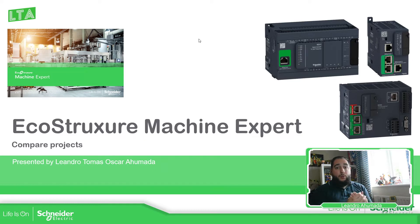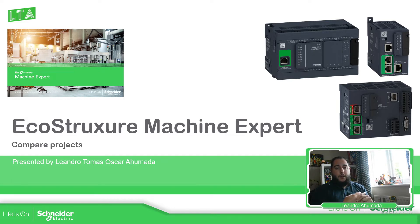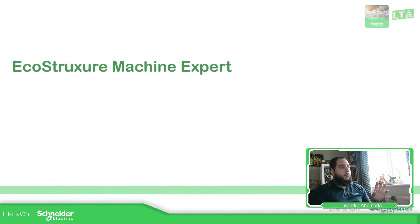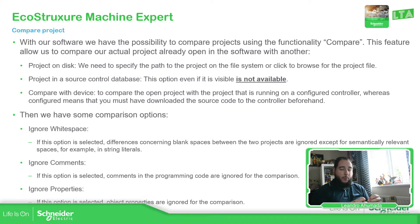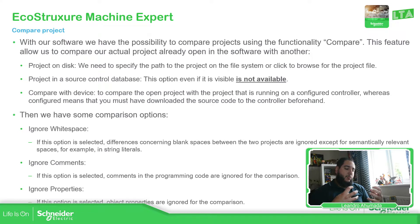In the past, when we used SoMachine before Machine Expert, we had this functionality to compare, but we needed to enable it using the tools in the software. Here in EcoStruxure Machine Expert, we already have that functionality easy to access. Basically, to make the comparison, it compares the project you want with another one located on your laptop. You can also retrieve from the controller the project if the controller has a source code, and then the software will read it and make the comparison.